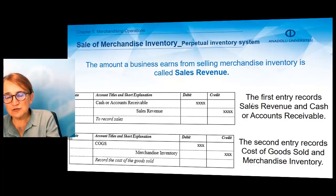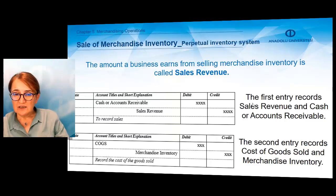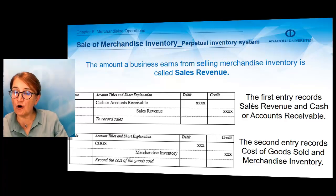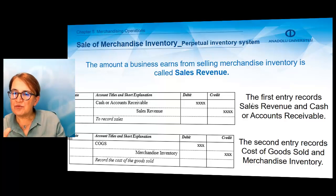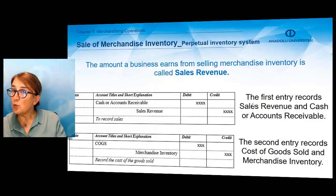The gross increase in assets equals the earned revenue, so revenue will be credited. To earn this revenue, we must give the merchandise inventory — the company's merchandise inventory will decrease. In the second journal entry, we make a credit entry to Merchandise Inventory, and the decrease in merchandise inventory is recorded at cost amount. This gross decrease in the asset, incurred to earn revenue, is recorded as an expense under the account title Cost of Goods Sold. The difference between sales revenue and cost of goods sold gives us the gross profit.